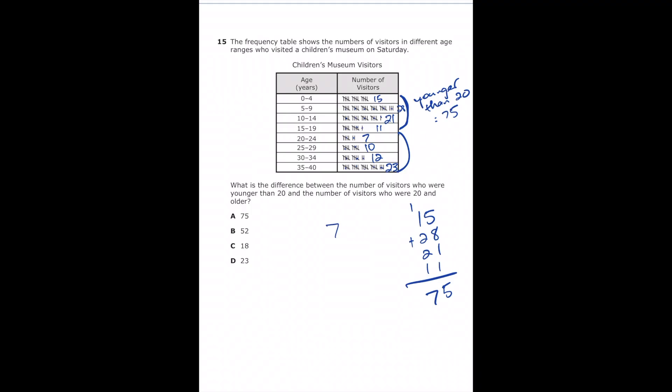So let's add those up. So we're going to add 7, 10, 12, and 23. So 7 plus 0 is 7, plus 2 is 9, plus 3 is 12. And then 1 plus 1 is 2, plus 1 is 3, plus 2 is 5. So now we want to know the difference between these two numbers. So 75 minus 52. 5 minus 2 is 3, and then 7 minus 5 is 2. So we should have an answer of 23. And that's going to be letter D.